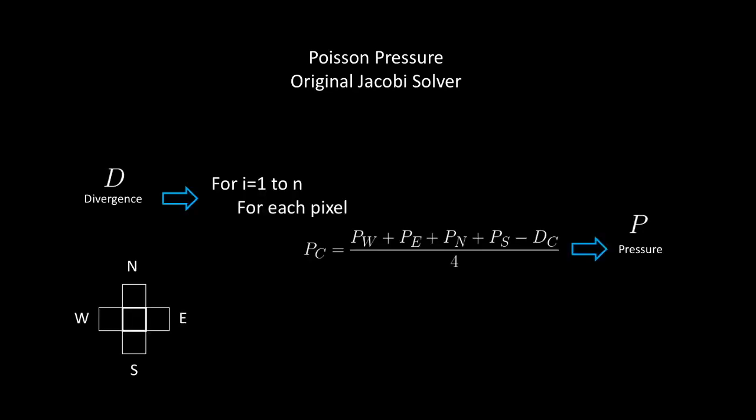In coding, it actually translates to something very simple. Given the divergence d, for n iterations and for each pixel, we update the pressure value of the central cell using its four neighbors. While the inner loop is a small kernel on GPU and very fast, the CPU cycle makes it very slow. So let's see how we can get rid of this CPU side loop.